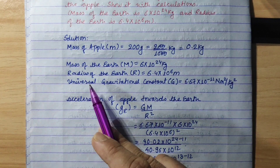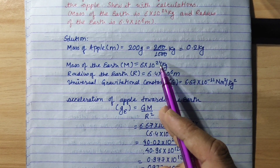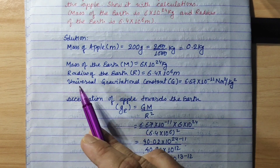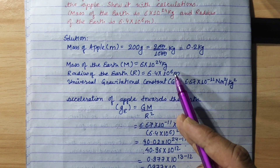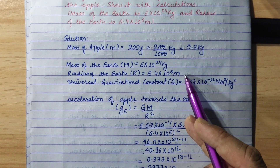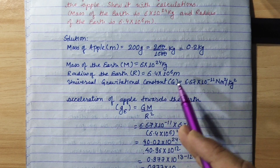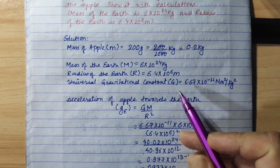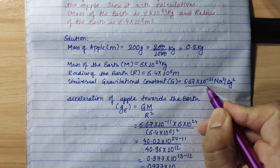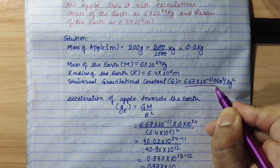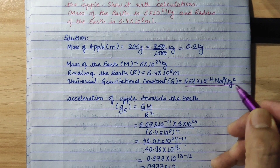With the given values: mass of the Earth is 6 × 10²⁴ kg, radius of the Earth is 6.4 × 10⁶ meters, and the universal gravitational constant G is 6.67 × 10⁻¹¹ N·m²/kg².